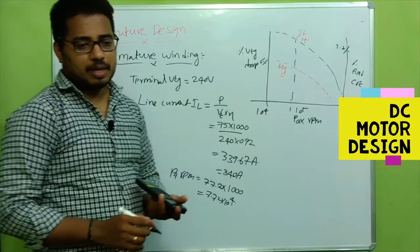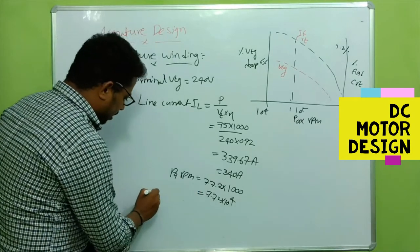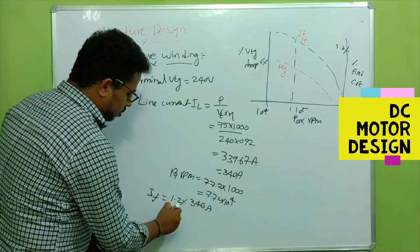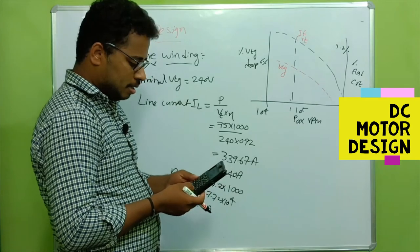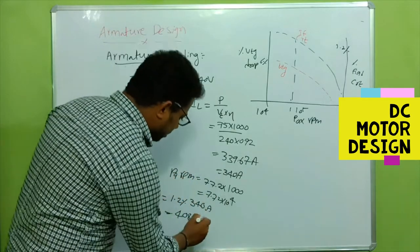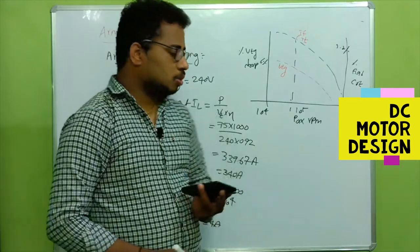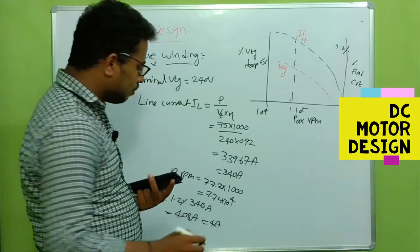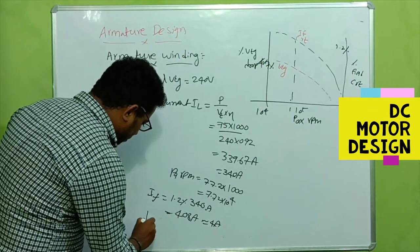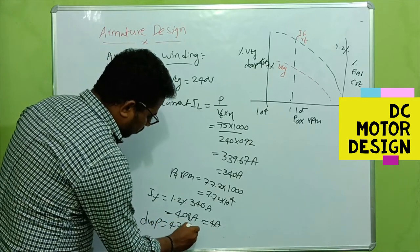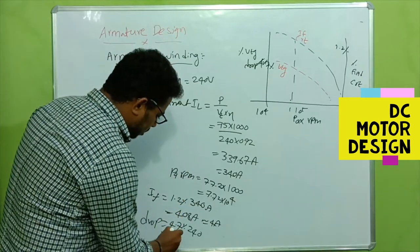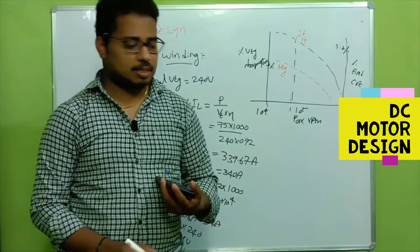The field current If is 1.2% of the armature current, which is 340 amperes. So: 340 × 1.2 / 100 = 4.08 amperes — let's take that as 4 amperes. The terminal voltage drop is 4.7% of 240 volts, giving us 11.28 volts — approximately 11.3 volts.